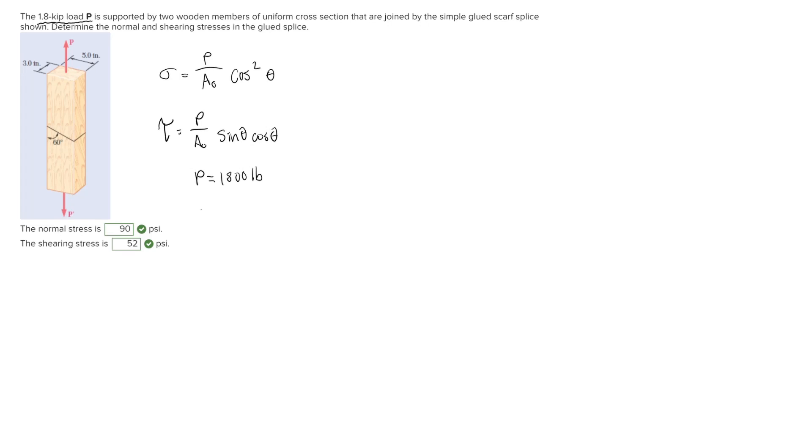We need to get A naught, and A naught is the cross-sectional area. That's given to us here—we have a three by five piece of wood, so three inches times five inches cross-sectional area is 15 inches squared. So we have P, we have A naught.